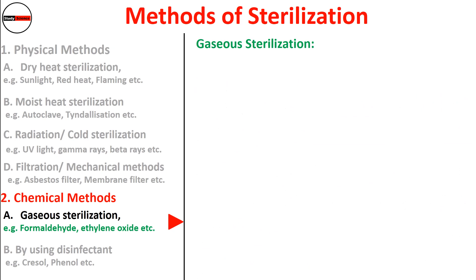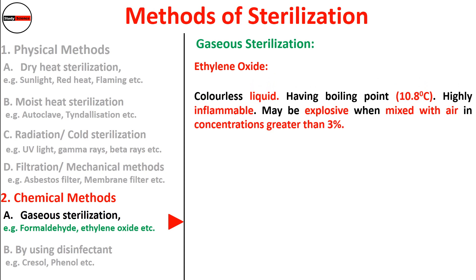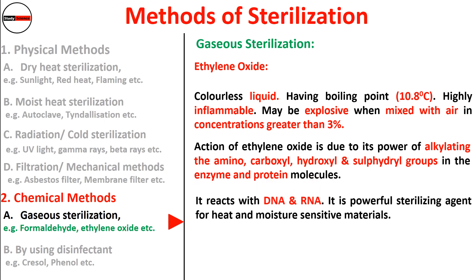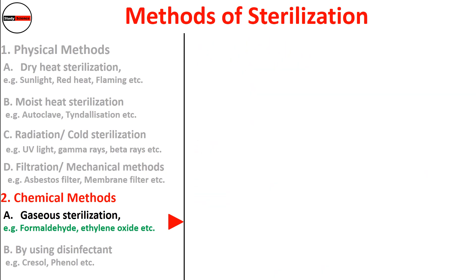Ethylene oxide is a colorless liquid with a boiling point of 10.8°C, making it highly inflammable and potentially explosive when mixed with air at concentrations greater than 3%. Its action is due to its power of alkylating the amino, carboxyl, hydroxyl, and sulfhydryl groups in enzyme and protein molecules. It reacts with DNA and RNA, making it a powerful sterilizing agent for heat- and moisture-sensitive materials, used for biological and medical preparations.